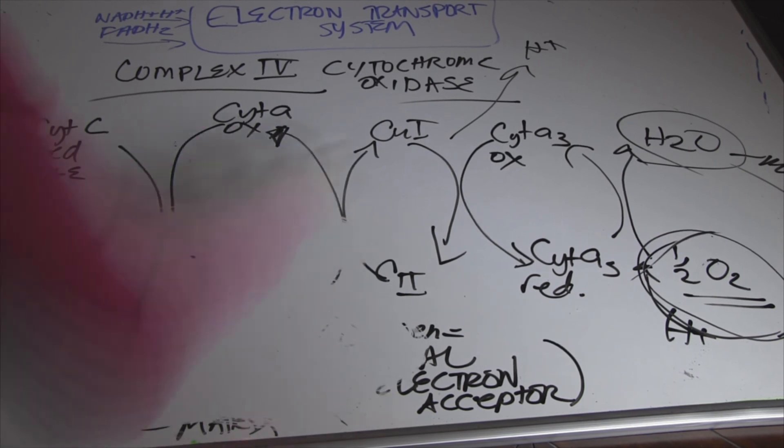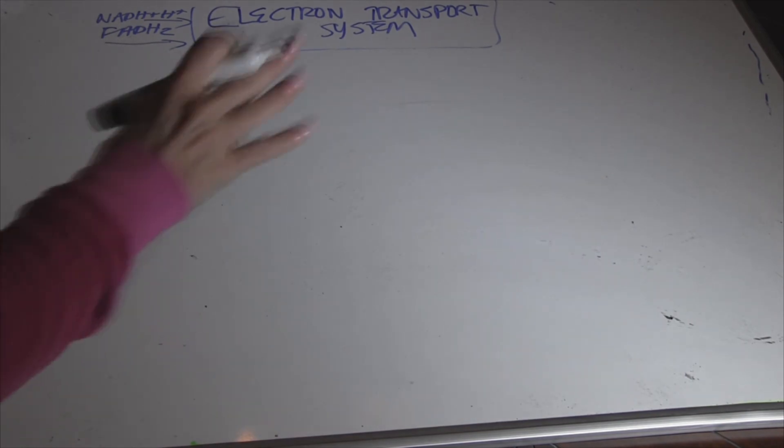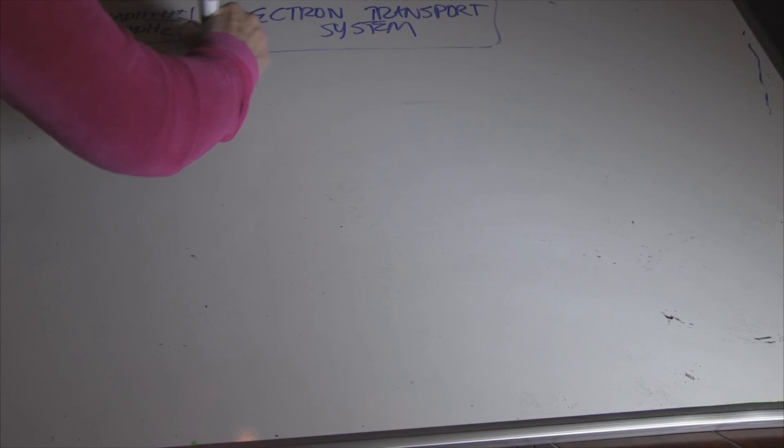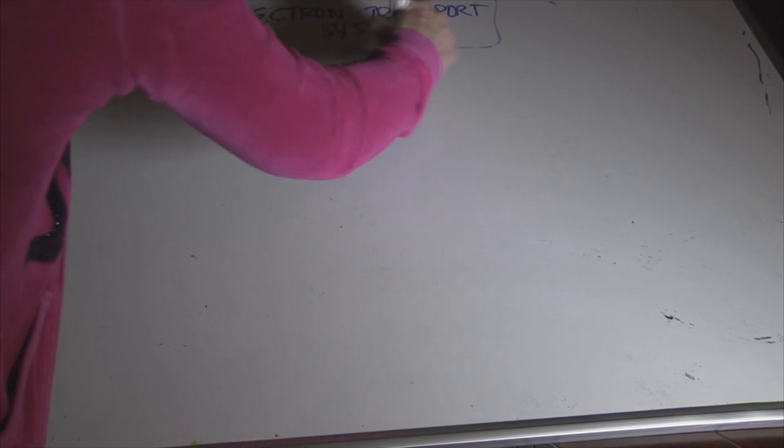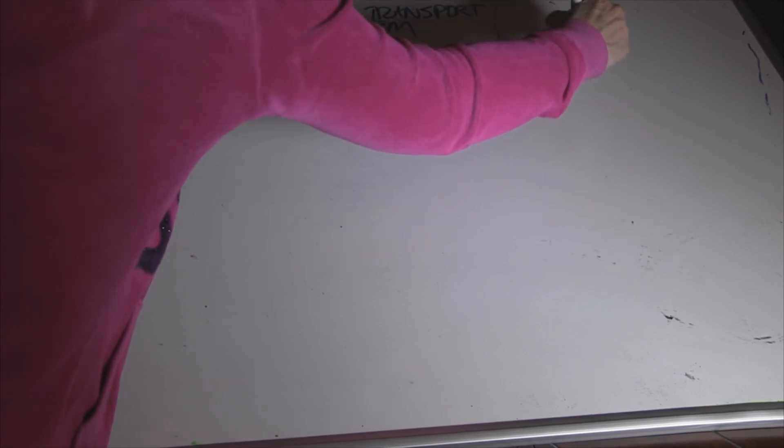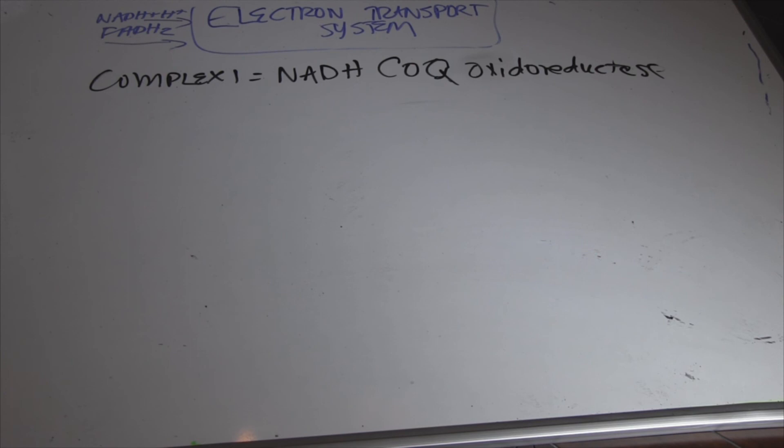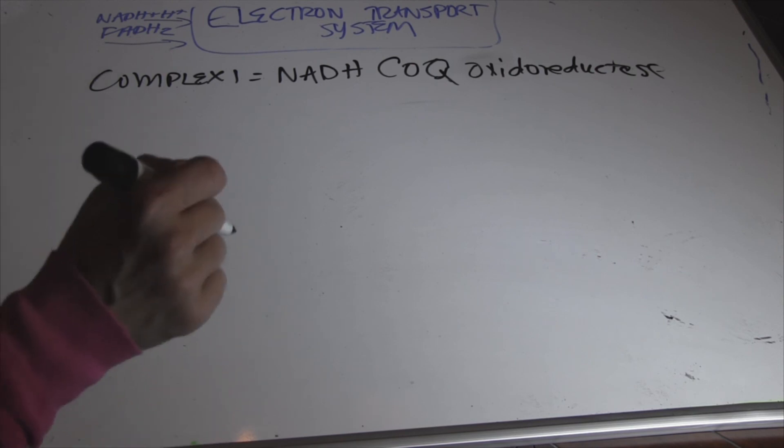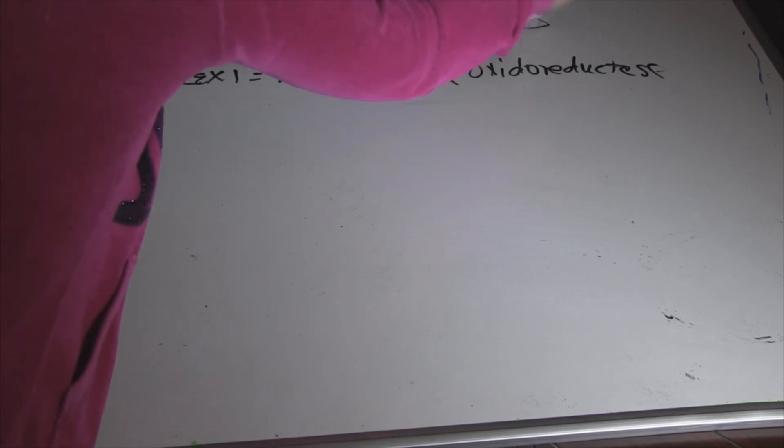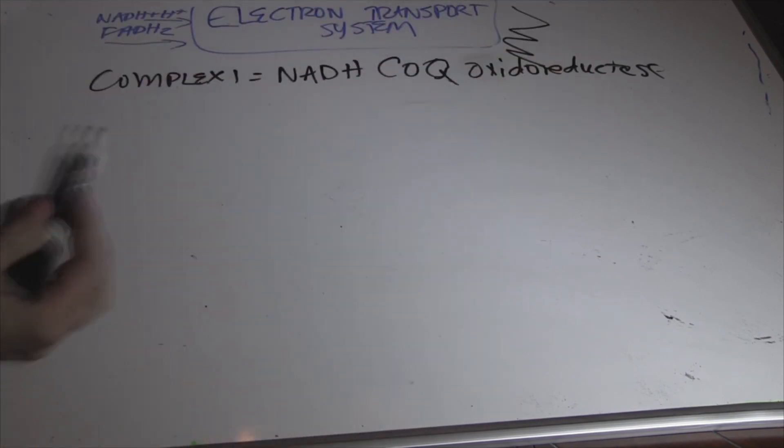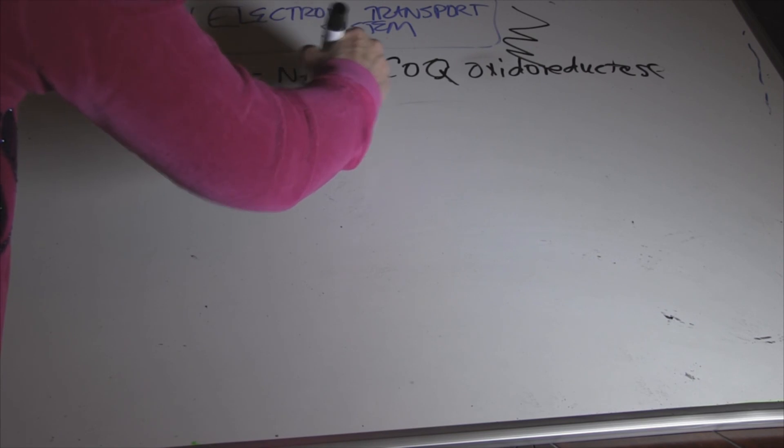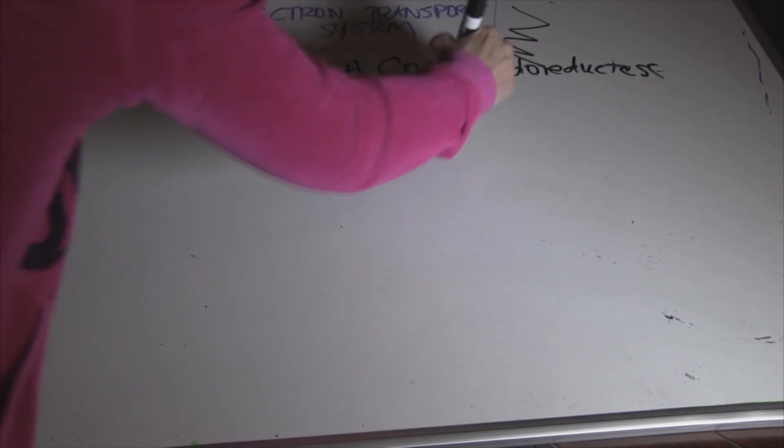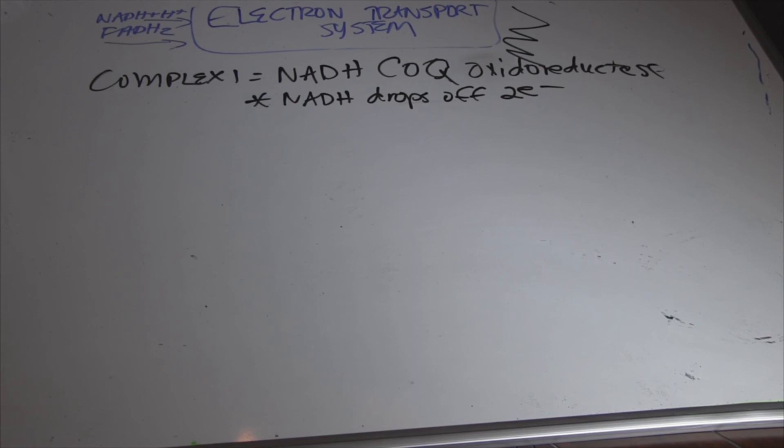Let's look at what has happened in summary. So the big points of the electron transport system before we go on. Complex 1 is NADH, coenzyme Q, oxidoreductase. That is some thunder right there. Okay, that is lightning. Okay, so here we have oxidoreductase complex 1. We have NADH drops off two electrons each time.